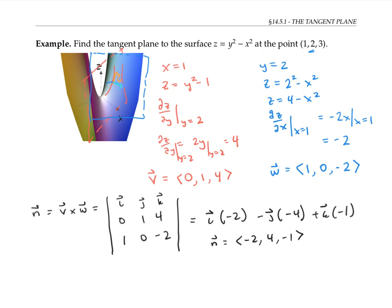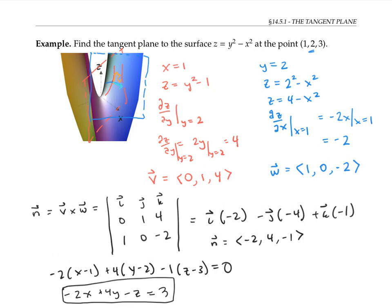Now that I have the normal vector to the plane and a point in the plane, it's easy to write down the equation for the plane. That will be negative two times (x minus one), plus four times (y minus two), minus one times (z minus three), equals zero. This equation can also be written as negative two x plus four y minus z equals three. Here's a computer rendering of the tangent plane.